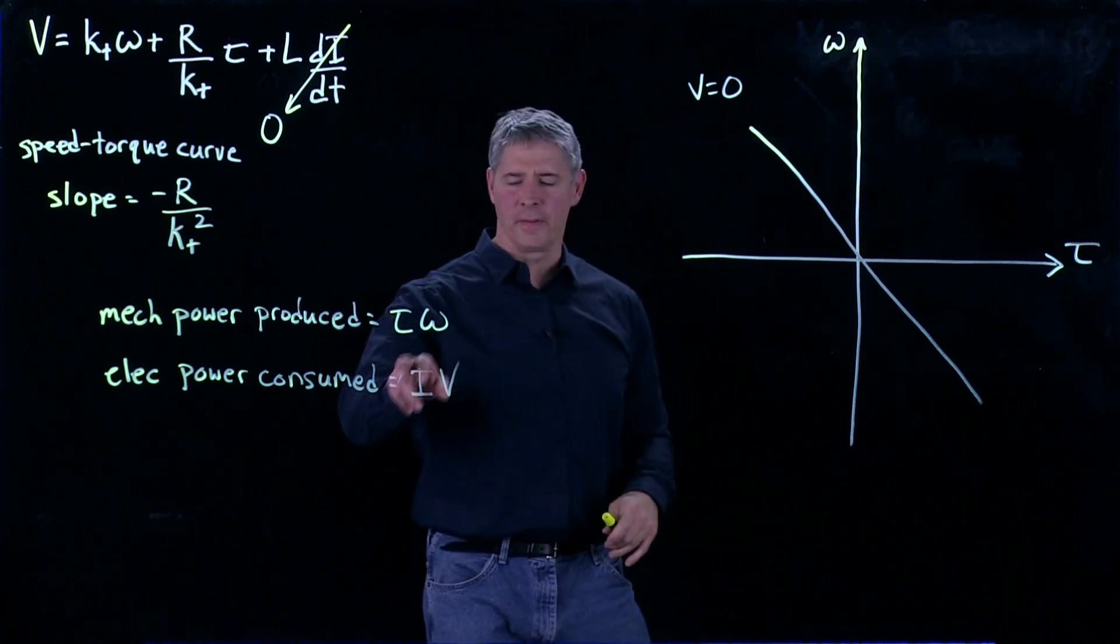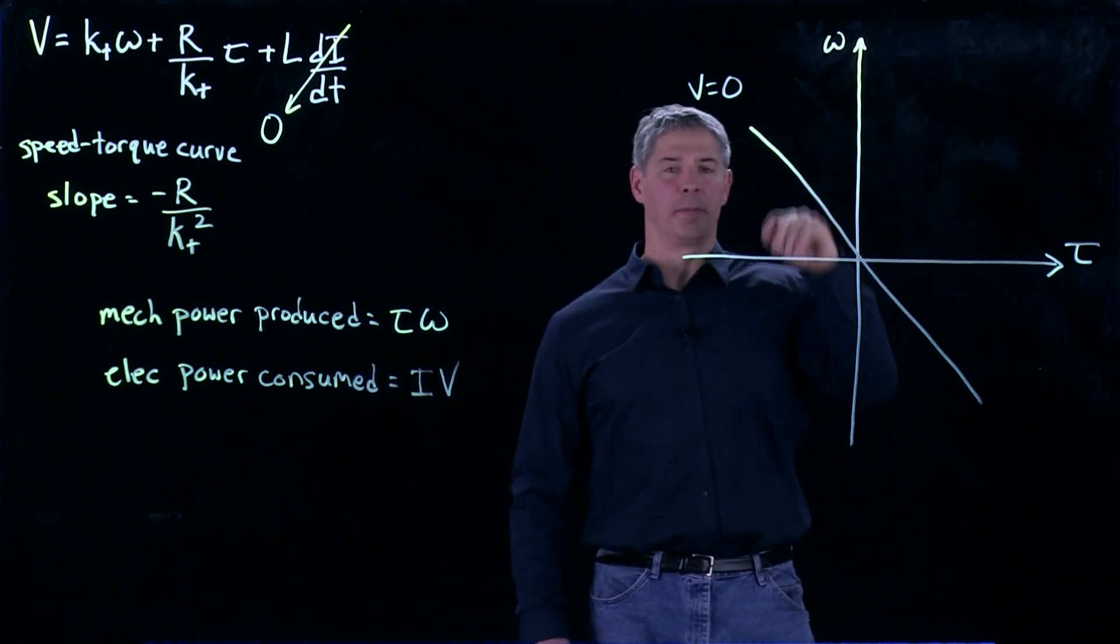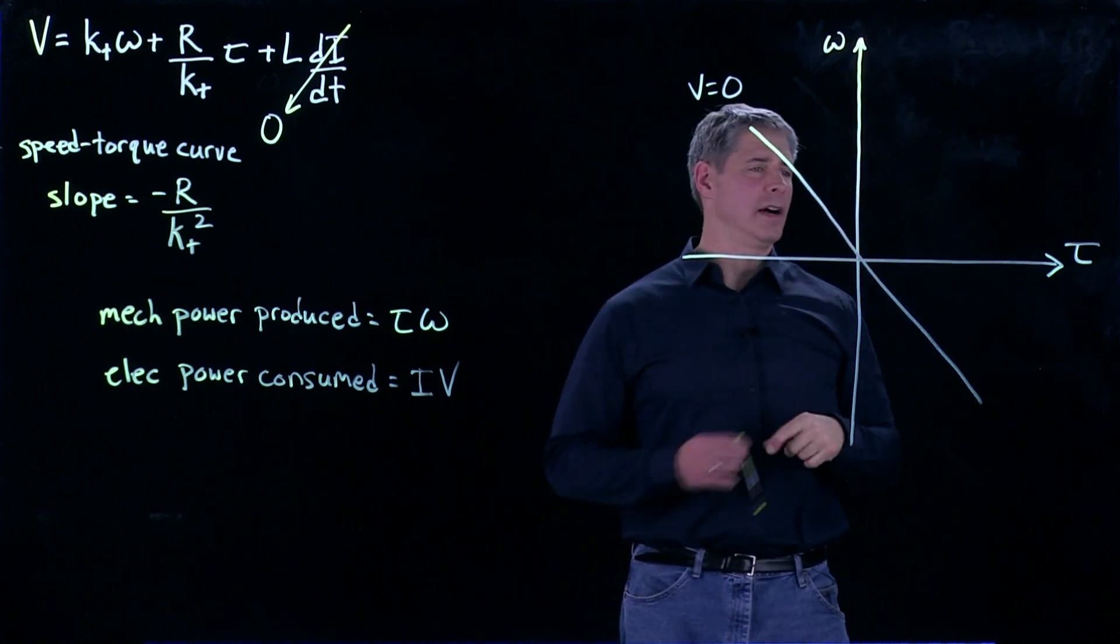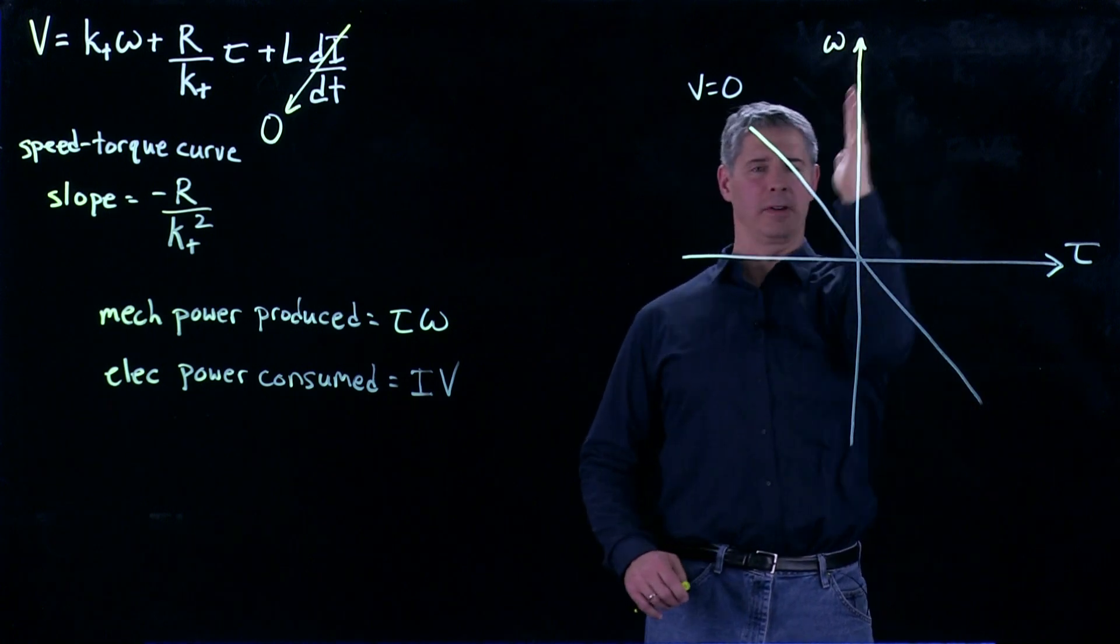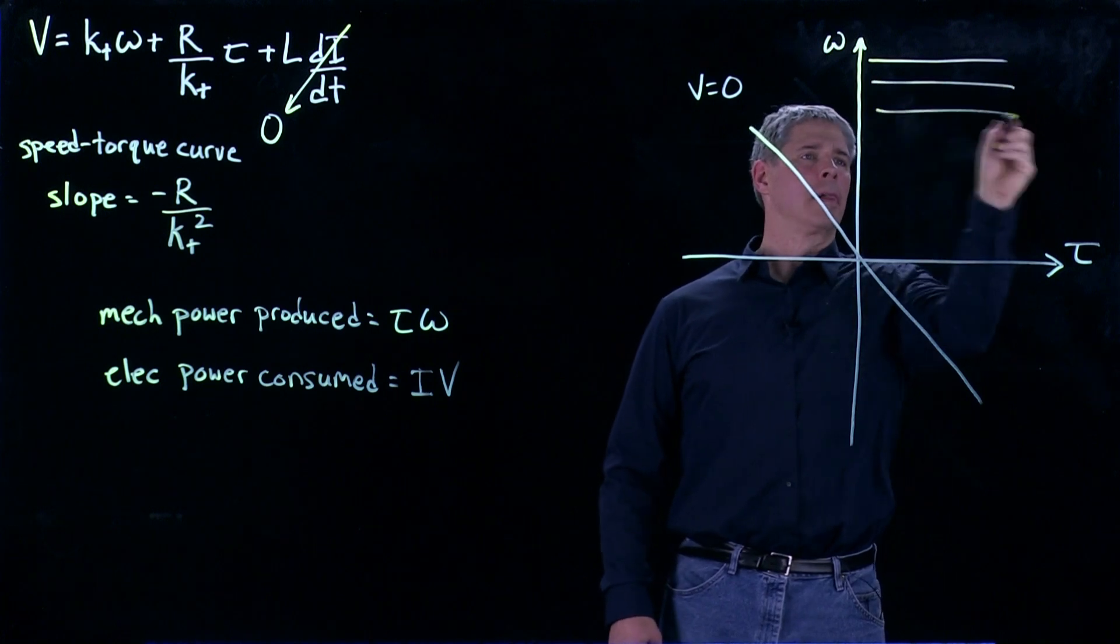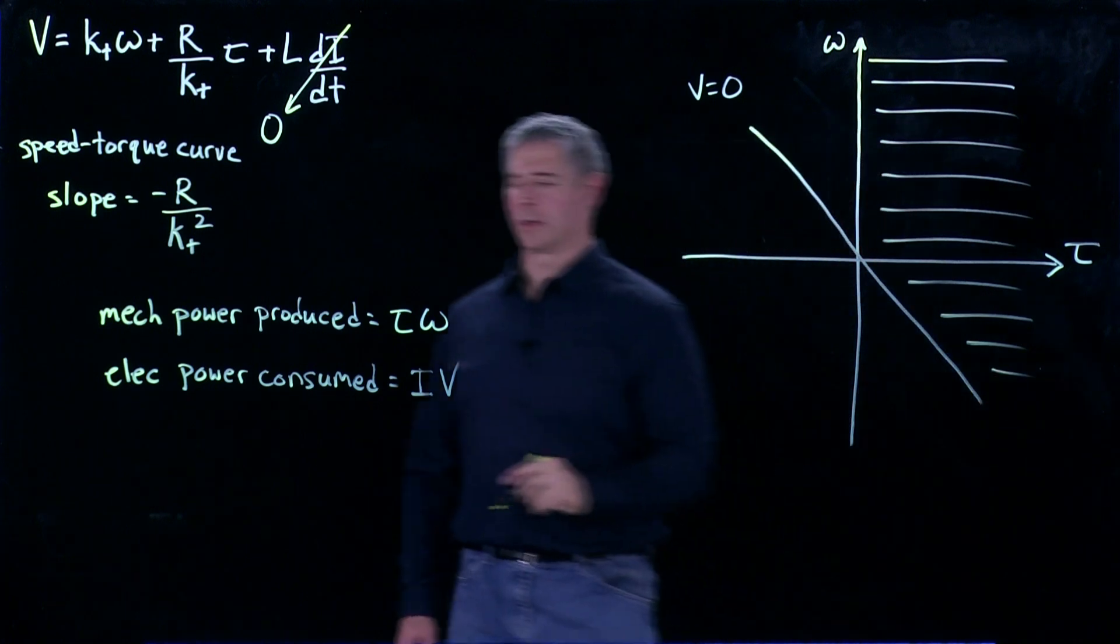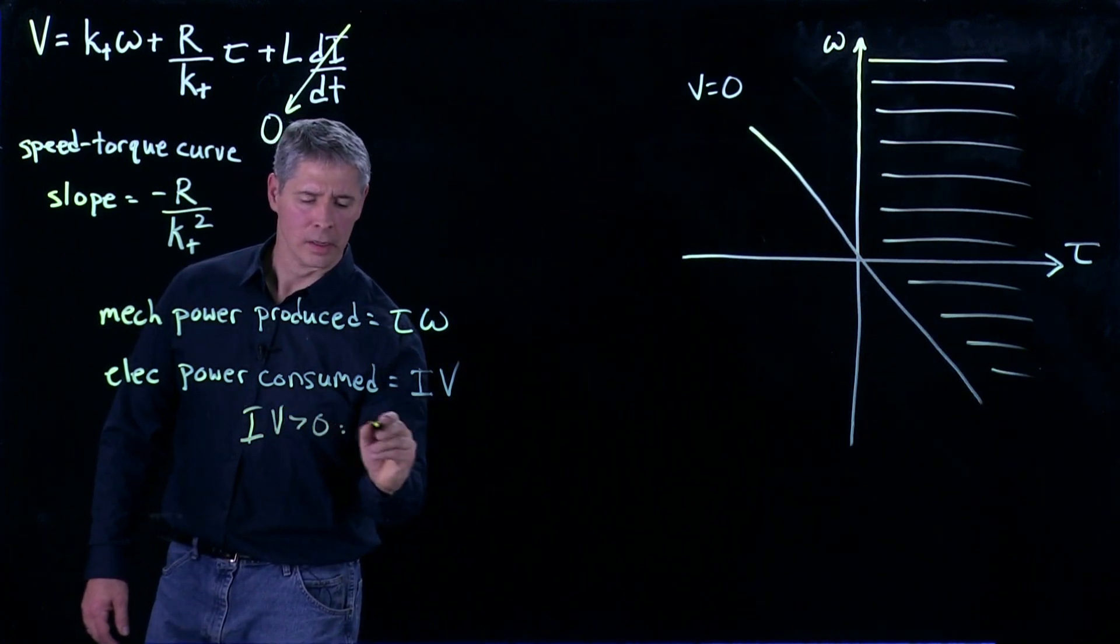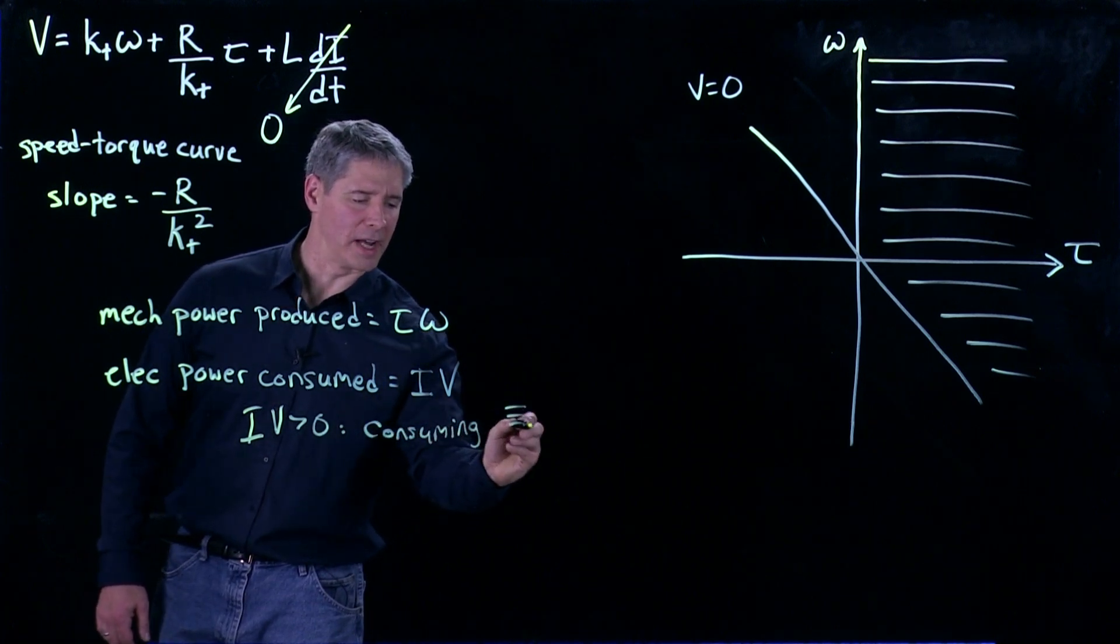So now we can evaluate where IV is greater than zero. And it's greater than zero if both I and V are positive, so we're somewhere above here, and the current is somewhere to the right. So the voltage is above here, the current is to the right, and so that draws out this region here. So IV greater than zero consuming electrical power. We're going to draw with this hash mark.